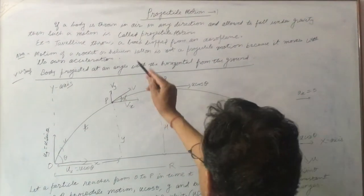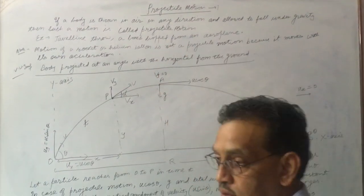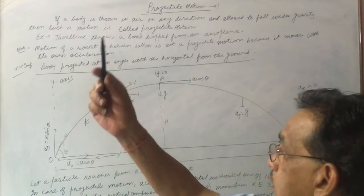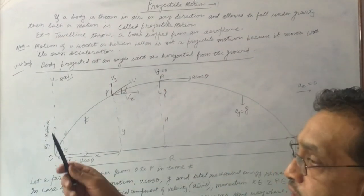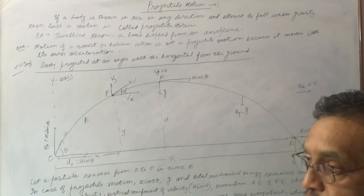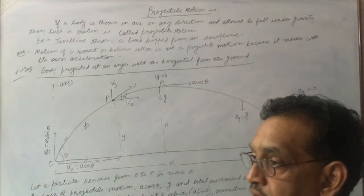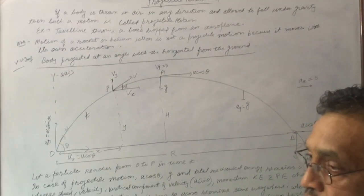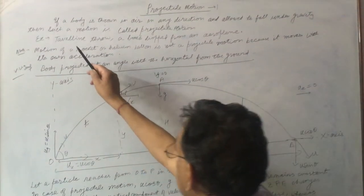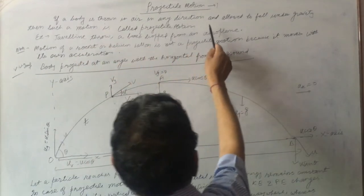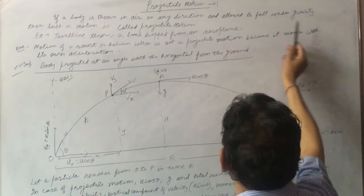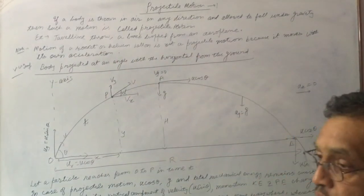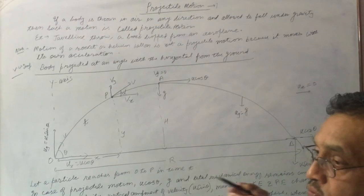The next topic is projectile motion. If a body is thrown in air in any direction and allowed to fall under gravity, such a motion is called projectile motion.